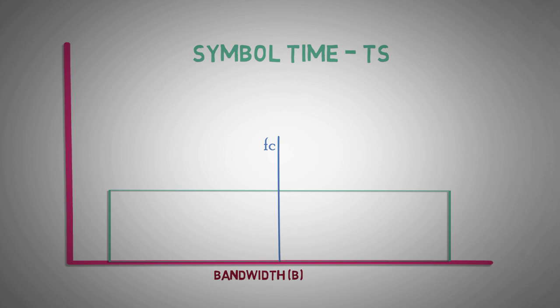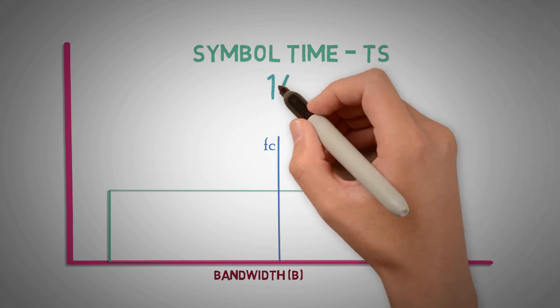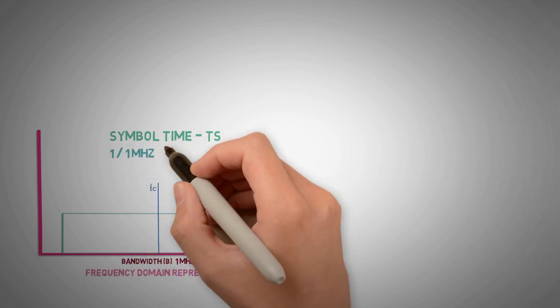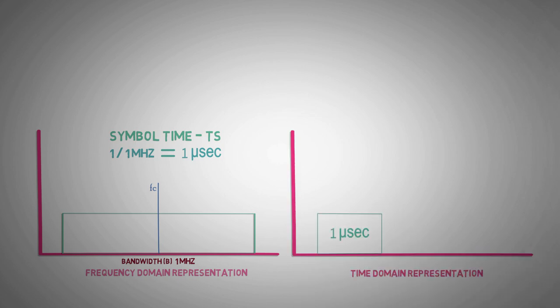Then symbol time for this would be TS equal to 1 by B. For a single carrier wideband channel of let's say 1 MHz, the symbol time will be 1 microsecond. Given that the delay spread of the channel is of 2 microseconds, the combined symbol time would be 3 microseconds.